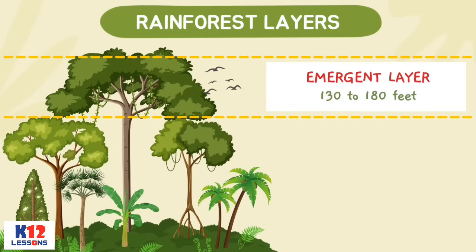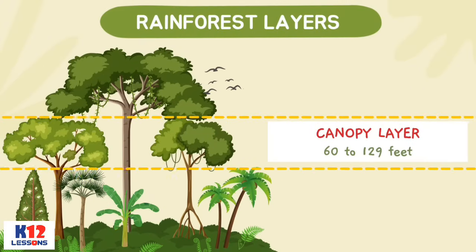The Emergent layer refers to trees that are 130 to 180 feet tall. The Canopy, on the other hand, has tall slender trees that form a dense platform of vegetation, from 60 to 129 feet off the ground.